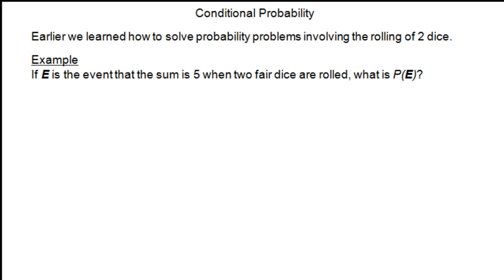Earlier, we learned how to solve probability problems involving rolling two dice. An example might be something like this: if E is the event that the sum is 5 when two fair dice are rolled, what is the probability of E?